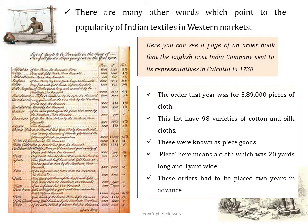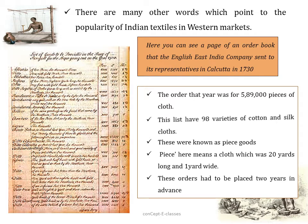Just like muslin and calico, there are many other words which point to the popularity of Indian textiles in the western market. Here you can see a page of an order that the English East India Company sent to its representatives in Calcutta in 1730, listing items such as chintz and bandana. That year's order was for about 5,89,000 pieces of cloth, and the list had 98 varieties of cotton and silk pieces. A piece here means a cloth 20 yards long and 1 yard wide, and these orders had to be placed 2 years in advance.